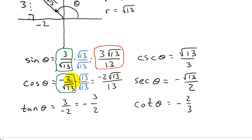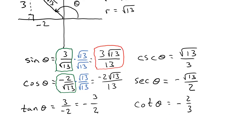So here are all six trig functions: sine, cosine, tangent, cosecant, secant, and cotangent. I hope this video helped — check out my other videos, thanks.